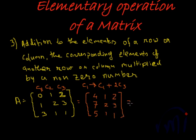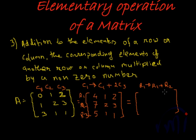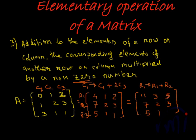Like the previous two elementary operations, you can do consecutive operations on the resultant matrix and the result will still be equivalent. Suppose we say r1 is transformed to r1 plus r2 — here we are multiplying r2 by 1, which is a non-zero number. Remember, elementary operations must use non-zero numbers. So r1 gets replaced with r1 + r2: 4+7=11, 1+2=3, 2+3=5; and the remaining rows r2 and r3 stay the same.